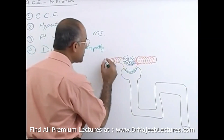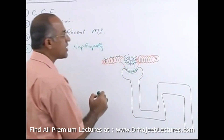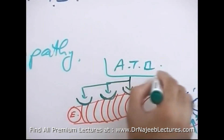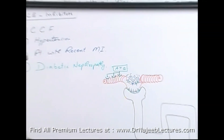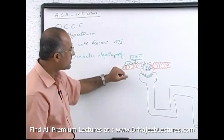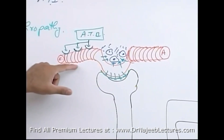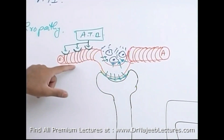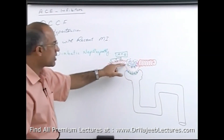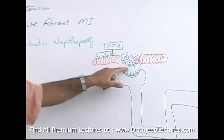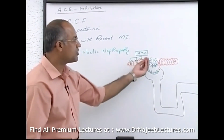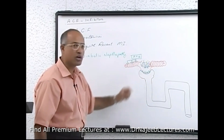Angiotensin 2 acts on receptors on the efferent arteriole, keeping it constricted. In diabetic patients, angiotensin 2 acts more on the efferent arteriole, which has more receptors, keeping it constricted. Due to this constriction, there is glomerular hypertension — high pressure in the glomeruli — which further leads to leakage of proteinaceous substances, damage to mesangium, and mesangial expansion, damaging the glomerular apparatus.